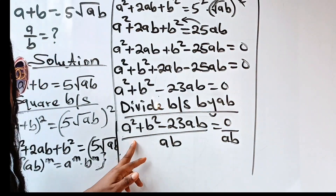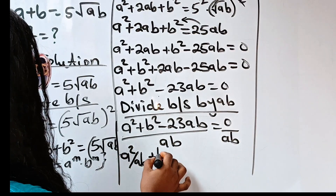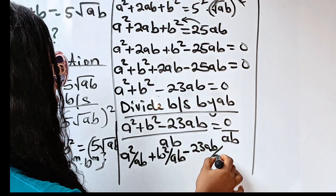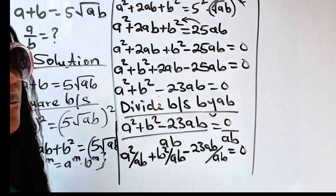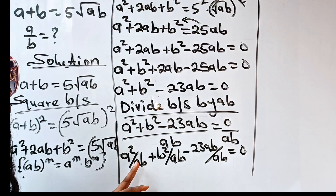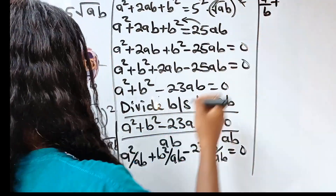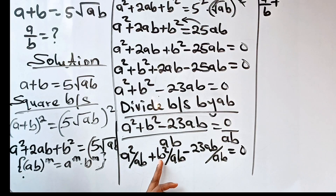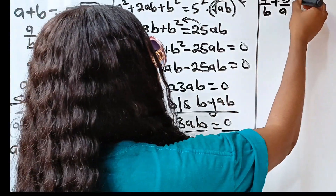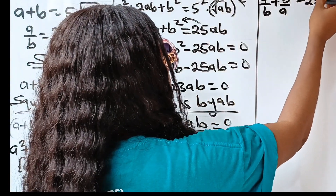So if we solve this further: A squared divided by AB, we cancel one A, and we are left with A over B. Then B squared divided by AB, we cancel one B, and we are left with B over A. And 23AB divided by AB, we cancel AB, leaving just 23. So we have A over B plus B over A minus 23 is equal to 0.